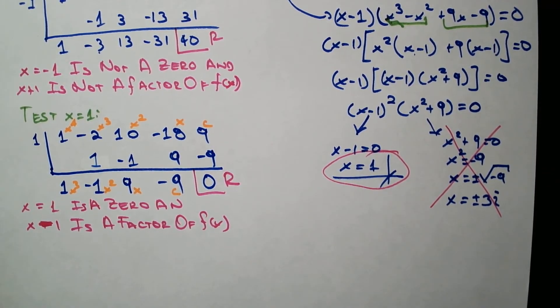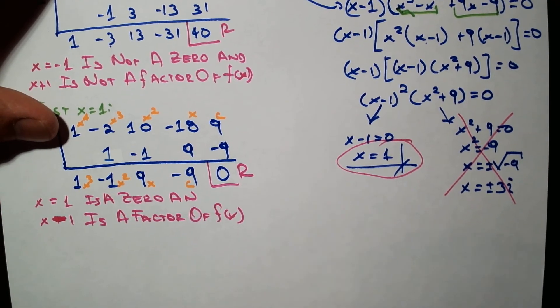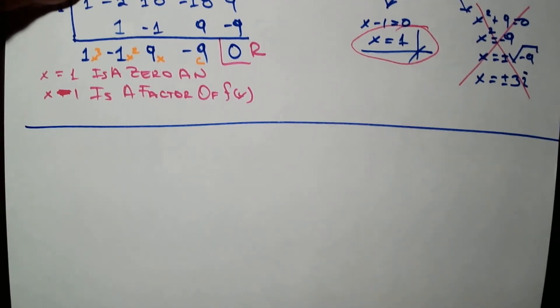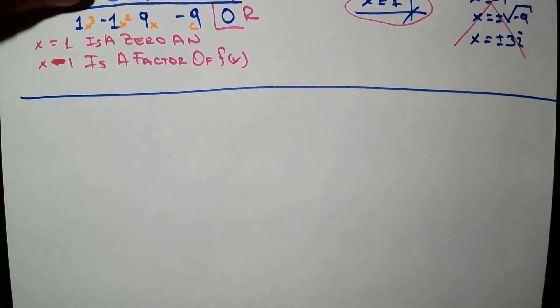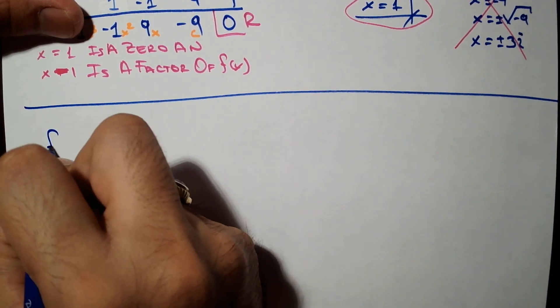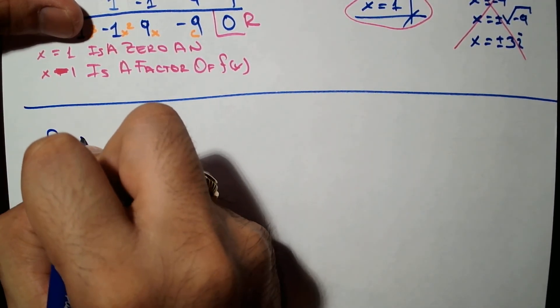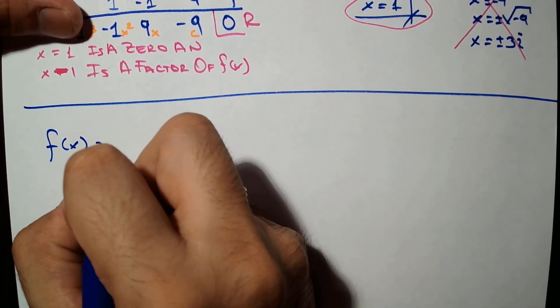Let me make up another example in which we have a polynomial with fractional potential zeros — one where we will only list the potential zeros.